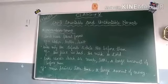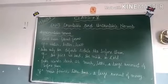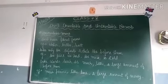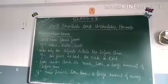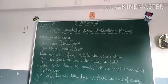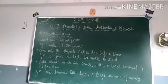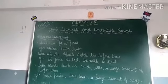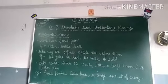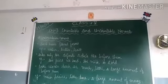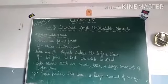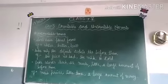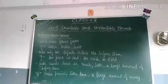Second point about uncountable nouns: they take only the definite article 'the' before them. Jab bhi uncountable noun hoga, to uske pahle definite article 'the' aayega. Examples: 'The juice we had' — juice ki counting nahin hoti. 'The milk is cold' — milk ki bhi counting nahin hoti. However, sometimes it can be made countable, like 'one litre of milk' or 'one glass of juice.'